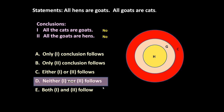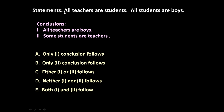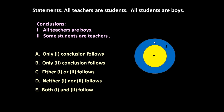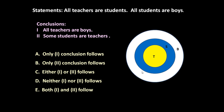Let us have one more question of similar type. The two statements given are: 'All teachers are students' and 'All students are boys.' Let us represent these through a Venn diagram using three concentric circles — boys as the outermost, students in the middle, and teachers as the innermost circle.